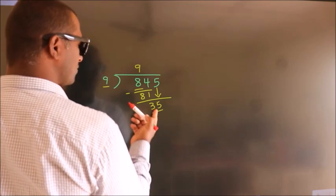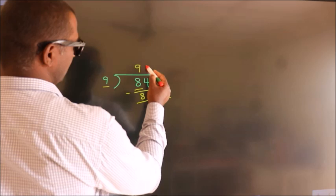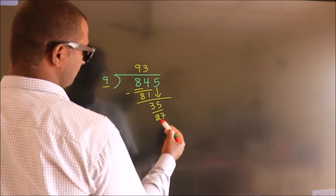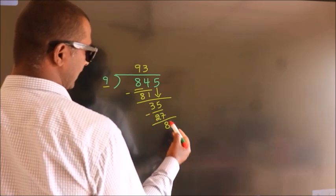A number close to 35 in the 9 table is 9 times 3 equals 27. Now we subtract and we get 8.